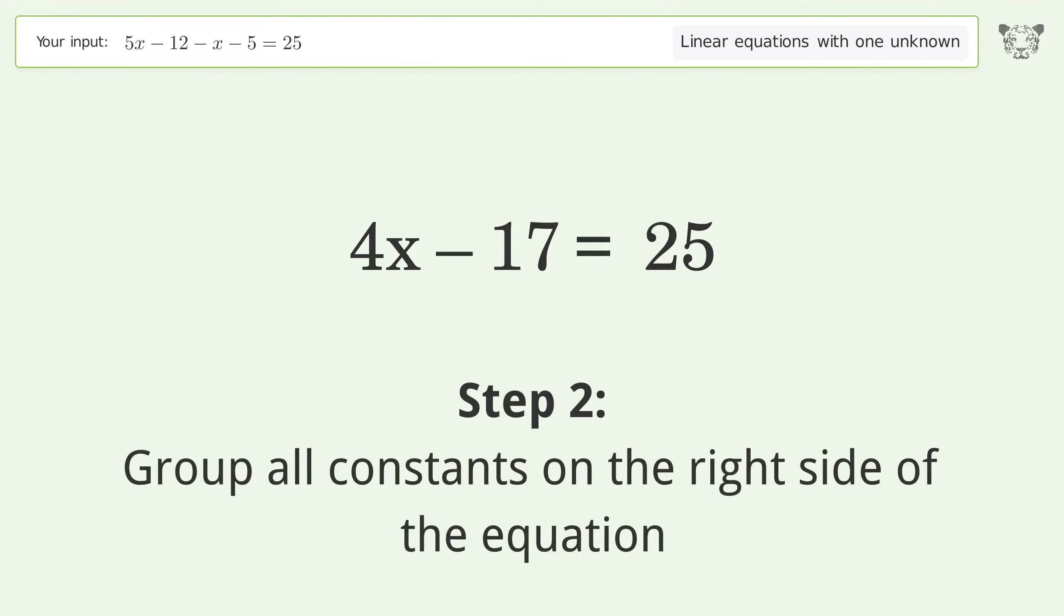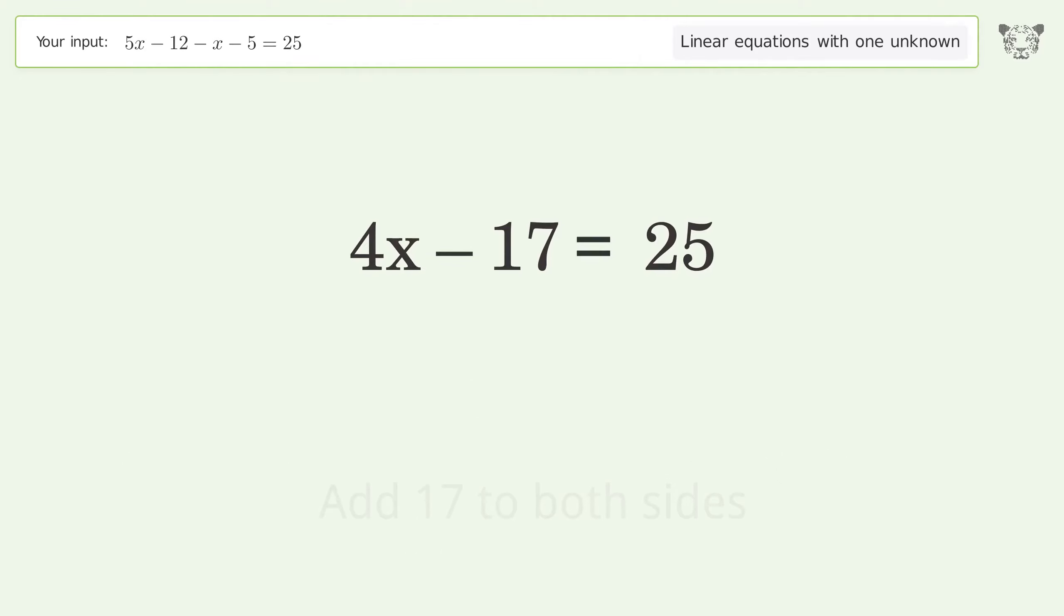Group all constants on the right side of the equation. Add 17 to both sides. Simplify the arithmetic.